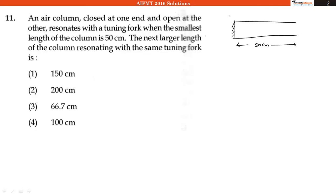So we should have a node here and if this is the minimum length, it means we have an antinode here.